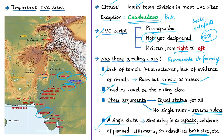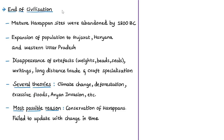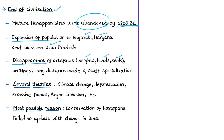By 1800 BCE, most mature Harappan sites had been abandoned. Simultaneously, there was expansion into new settlements in Gujarat, Haryana, and western Uttar Pradesh, along with a transformation in material Harappan culture. Distinctive artifacts such as weights, seals, and special beads disappeared, and long-distance trade, writing, and craft specialization also disappeared.